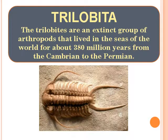Trilobita — Trilobites are an extinct group of arthropods that lived in the seas of the world for about 380 million years, from the Cambrian to the Permian.